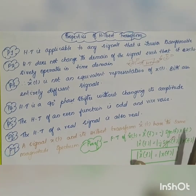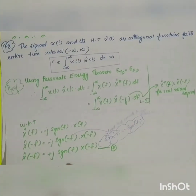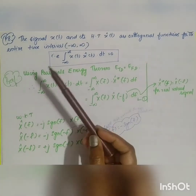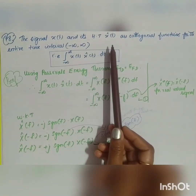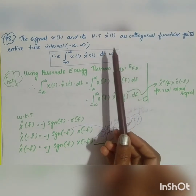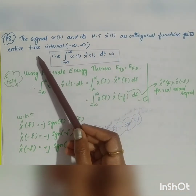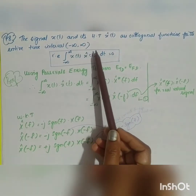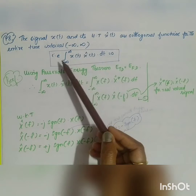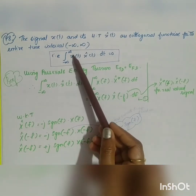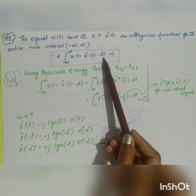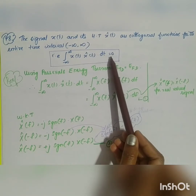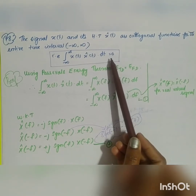Moving on to the next very important property: a signal x(t) and its Hilbert transform x̂(t) are orthogonal functions over the entire time interval from minus infinity to infinity. That is, the integral from −∞ to ∞ of x(t)·x̂(t) dt is equal to 0.